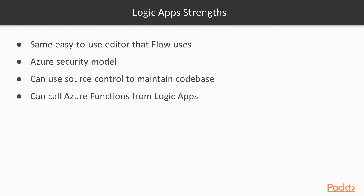Logic Apps has its own set of strengths. First, it uses the same easy-to-use editor that Microsoft Flow uses. It follows the Azure security model, so you can set up role-based access control to have more say into what happens in your Logic Apps. You can use source control to maintain your code base, so infrastructure as code is possible with Logic Apps. And you can also call Azure functions from Logic Apps, giving you the power of tying a SaaS app to an Azure function where Azure functions might not support that integration directly.